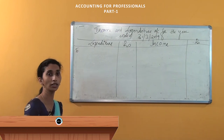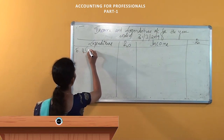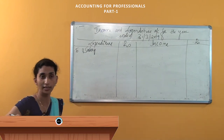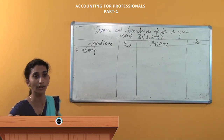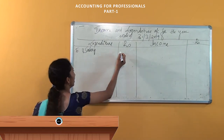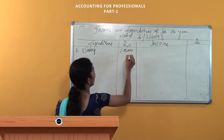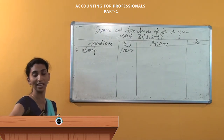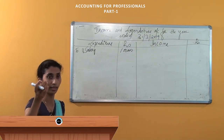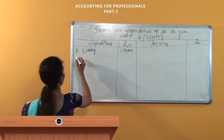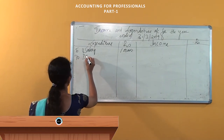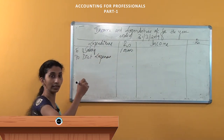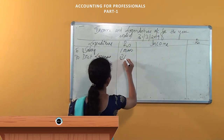We start with salary. If there is any outstanding salary it should be added, but there is none outstanding, so salary is 1 lakh rupees. Next, instruments and equipment — that is a balance sheet item. Then diet expenses, which is our expense, so diet expenses come to 6,000.